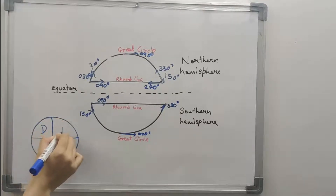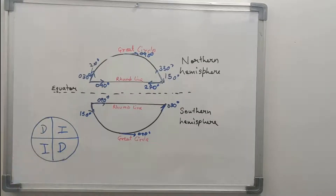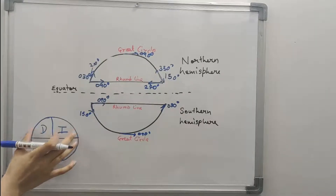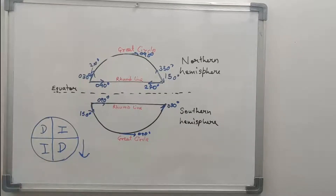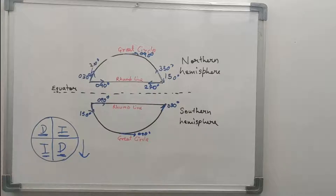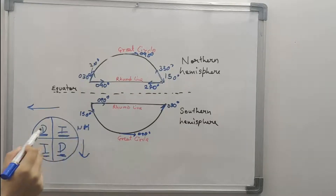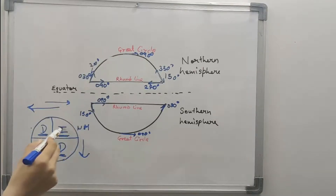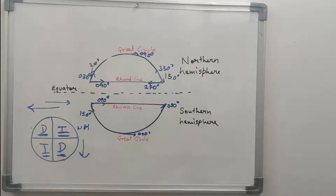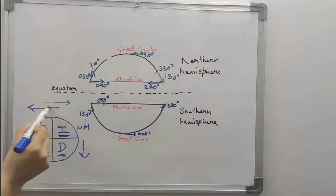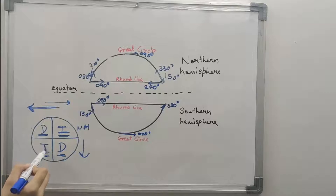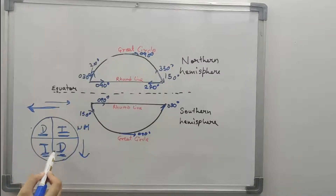This can be summarized with the simple diagram 'DIID'. The top half represents the Northern Hemisphere and the bottom half the Southern Hemisphere. D stands for decreasing, I for increasing. So traveling west in the Northern Hemisphere, the great circle track direction decreases. Traveling east in the Northern Hemisphere, the track direction increases. The opposite applies in the Southern Hemisphere: traveling west increases the track direction, while traveling east decreases it.